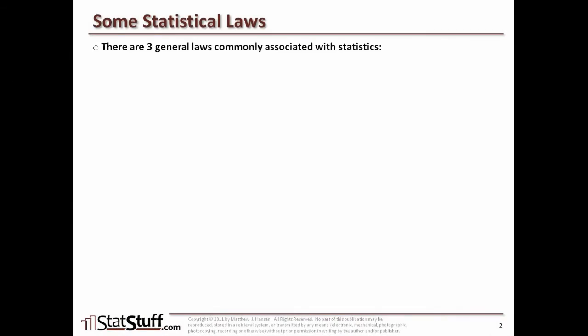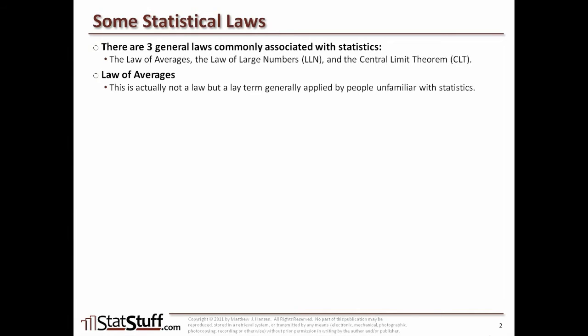There are three general laws that are commonly associated with statistics: the law of averages, the law of large numbers, and the central limit theorem. Let's start to explore the law of averages. This actually isn't a law, but it's usually a lay term that people use when they're unfamiliar with statistics. It represents a belief that the outcome of random events will even out for them.